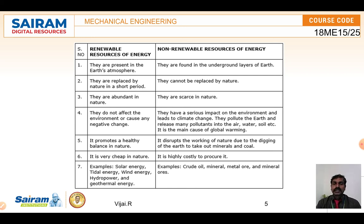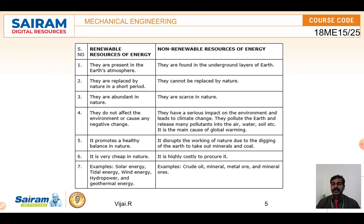Renewable energy can be utilized repeatedly — we can get it back again and again. It is normally present in the earth's atmosphere and we call it renewable energy sources. Non-renewable sources like petrol, coal, or natural gases are found under the earth in ground layers. We can dig and only then we will get it — that is a non-renewable energy source.